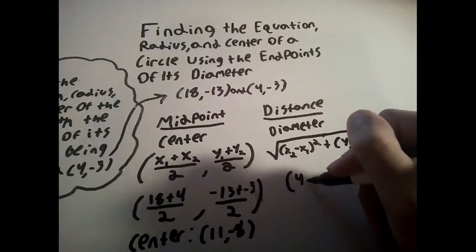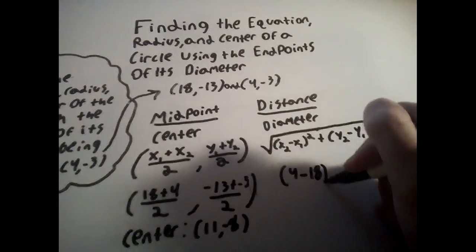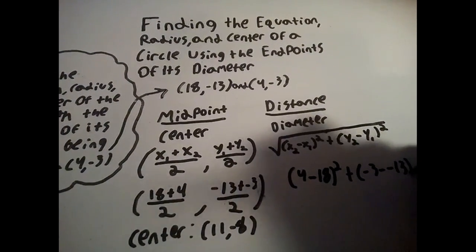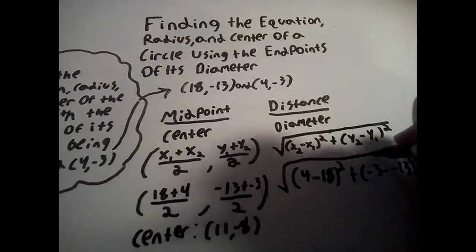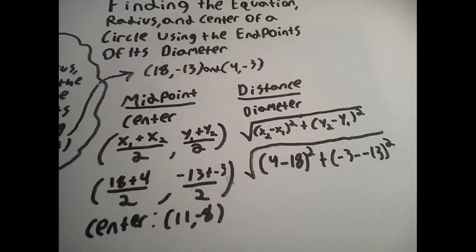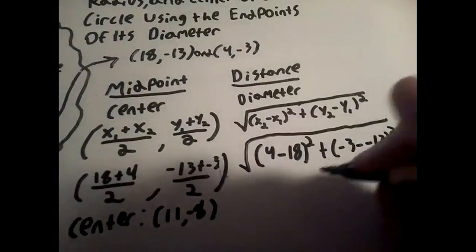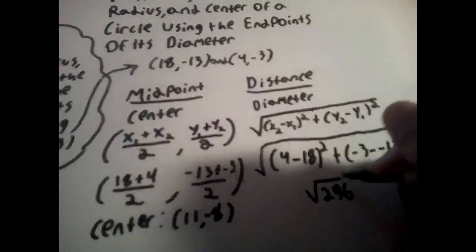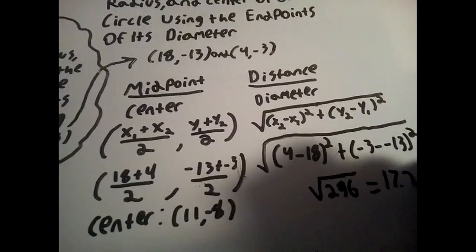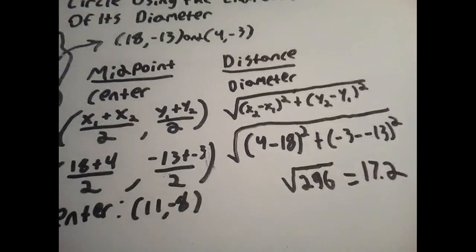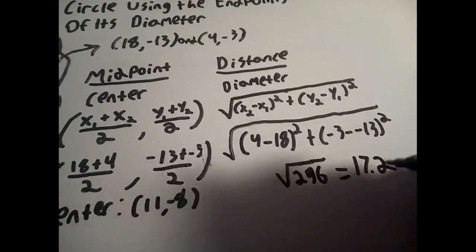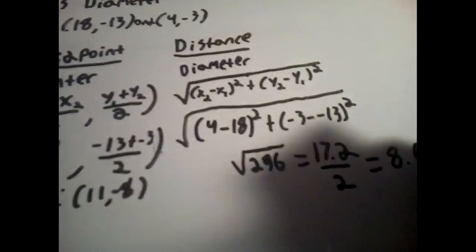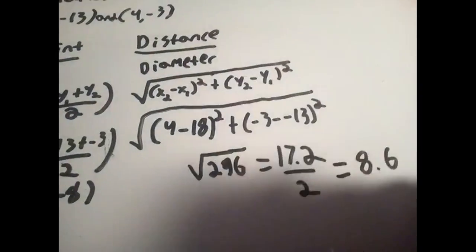We still need the diameter though, so we're going to plug in the values again in the distance formula. When we do this, we get the square root of 4 minus 18 squared plus negative 3 plus 13 squared. This simplifies to 17.2. Now some might get this confused for the radius, which is half the diameter. So always divide the result of the distance formula by 2 when given the endpoints of the diameter to find the radius. When we do this, we get 8.6 as our radius.